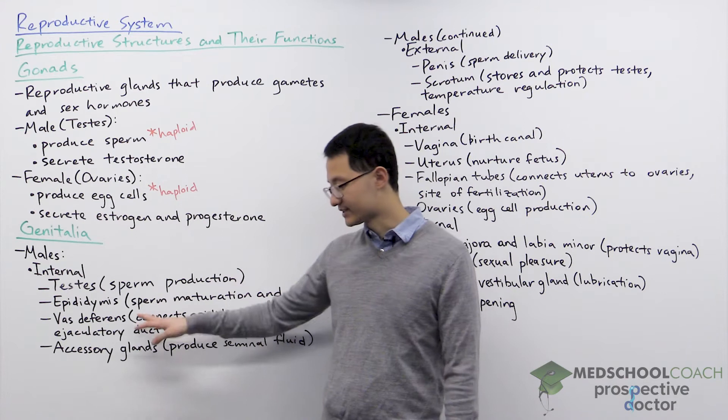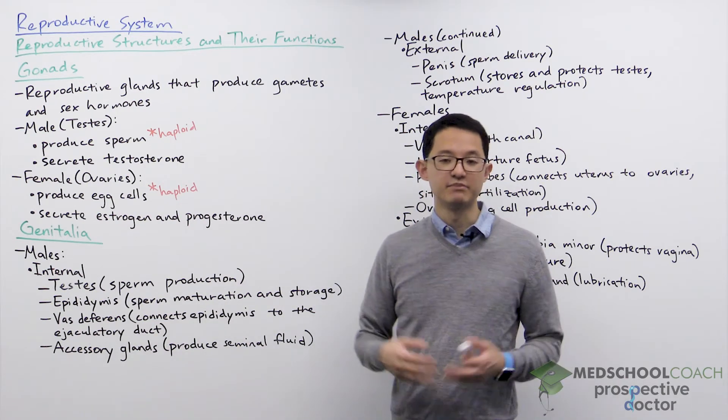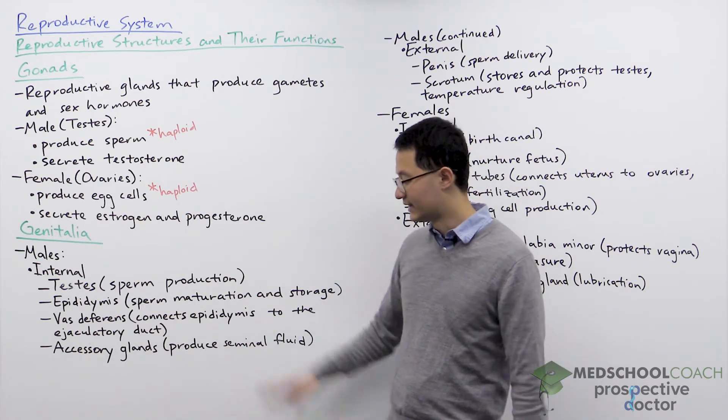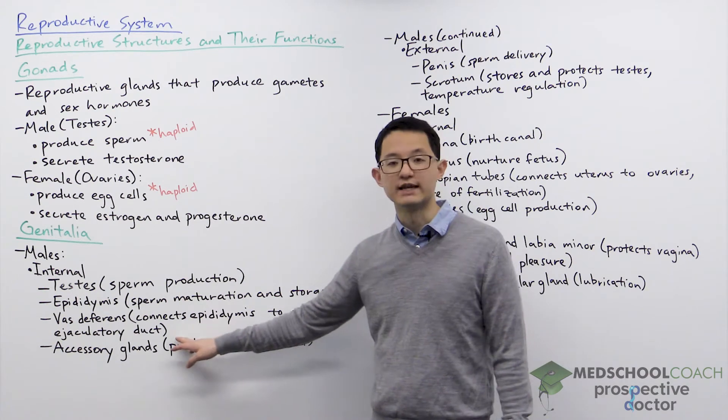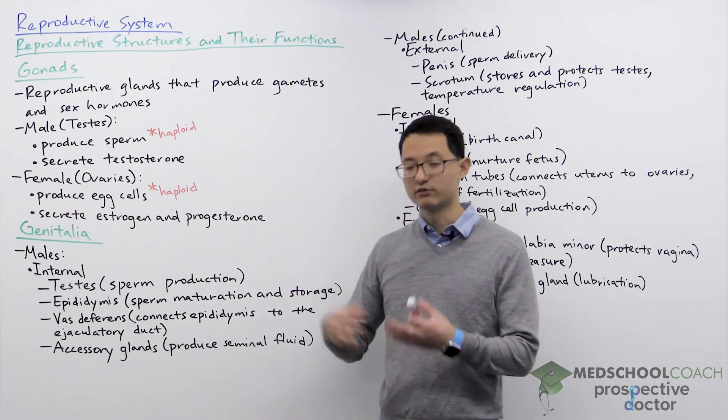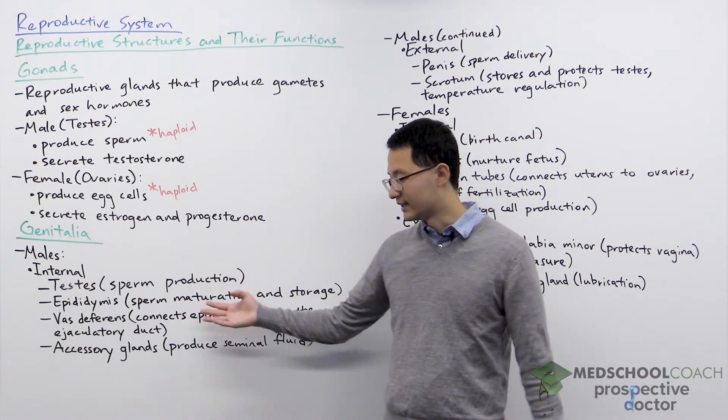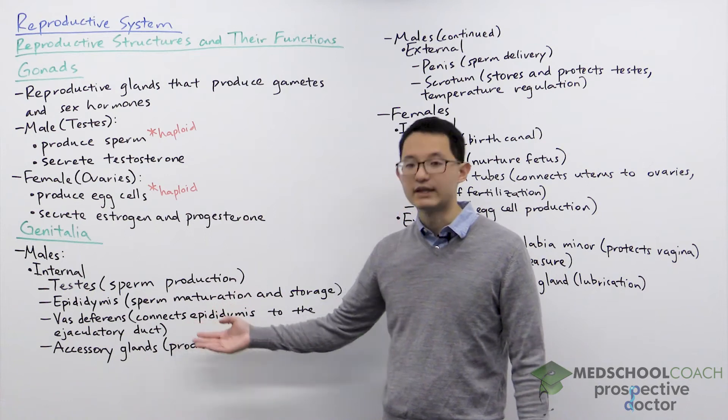The next structure is the vas deferens. The vas deferens is simply a tube that connects the epididymis to the ejaculatory duct. Through the ejaculatory duct the sperm will enter the urethra.